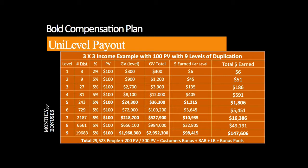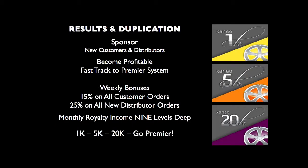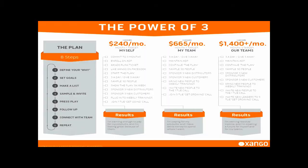You build your network of product customers and distributors, and every time they reorder, you get checks in the mail. We're going to sponsor customers and distributors so we can become profitable and fast-track to Premier. Weekly bonuses: 15% on all customer orders, 25% on all new distributor orders, and then our monthly royalty income through nine levels of referrals.